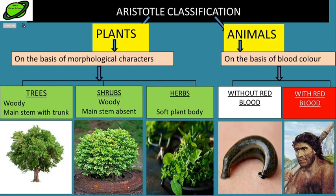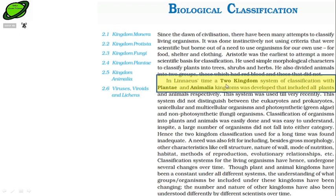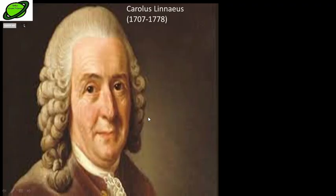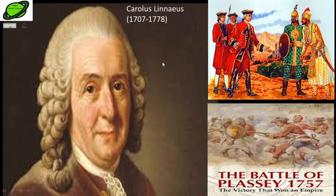The second attempt to classify living organisms was done by Linnaeus. Linnaeus classified all living organisms into two kingdoms: Plantae and Animalia. Linnaeus was basically a Swedish biologist who did considerable work in the field of biology. His time span was 1707 to 1778, a period when the British East India Company had already entered our country.